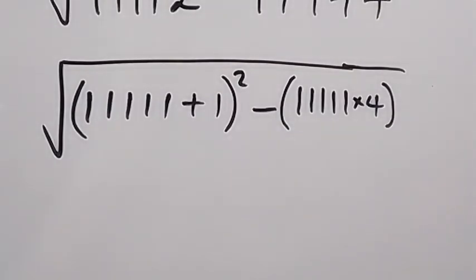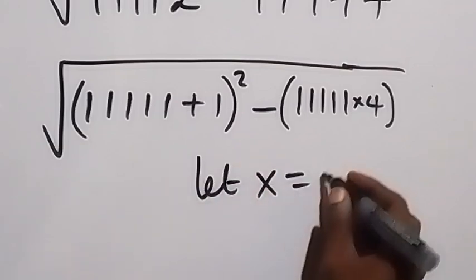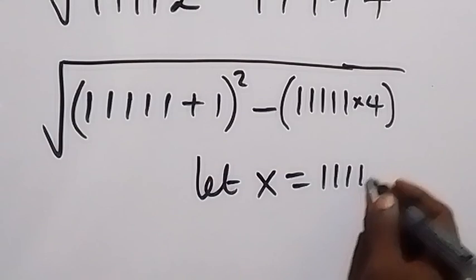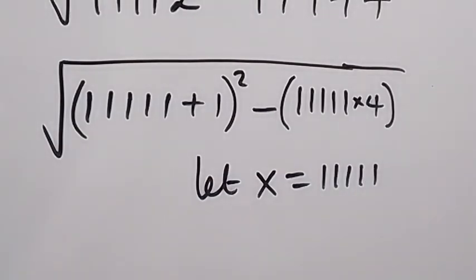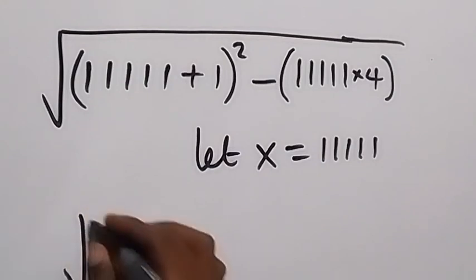So we can use a letter to represent that and say let x, letter x, be equal to 111111. Then we write what we have again in terms of x.